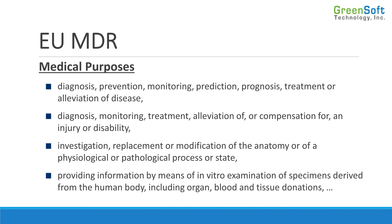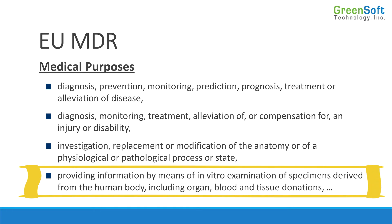Down here where it talks about means of in vitro examination of specimens — a good example of this would be diabetics. People who have diabetes will sometimes have a blood sugar monitor at home, which is a handheld electronic device. They prick their finger, put a drop of blood on there, and it tells them their blood sugar. That device is not really treating the disease, but it is monitoring. So it kind of falls into that category, but it's also an examination of specimens derived from the human body. Because of that, it's considered in scope as a medical device.